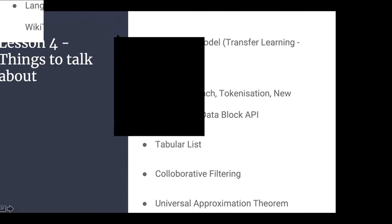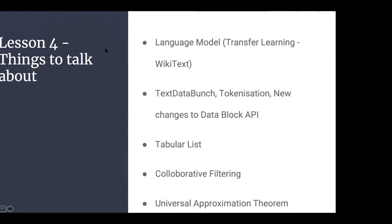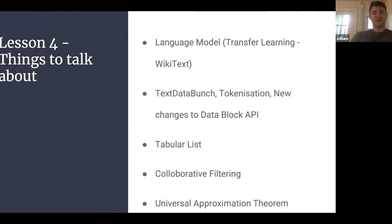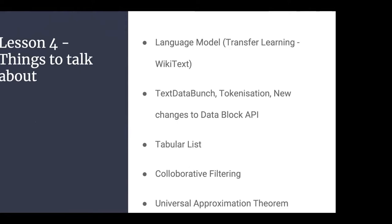A question was raised about the tabular model architecture — specifically, what does '200 by 100' mean? The answer: it's essentially a fully connected network. You get embeddings for categorical variables, concatenate them with numerical features, and pass them through fully connected layers. The 200 and 100 refer to two such fully connected layers.